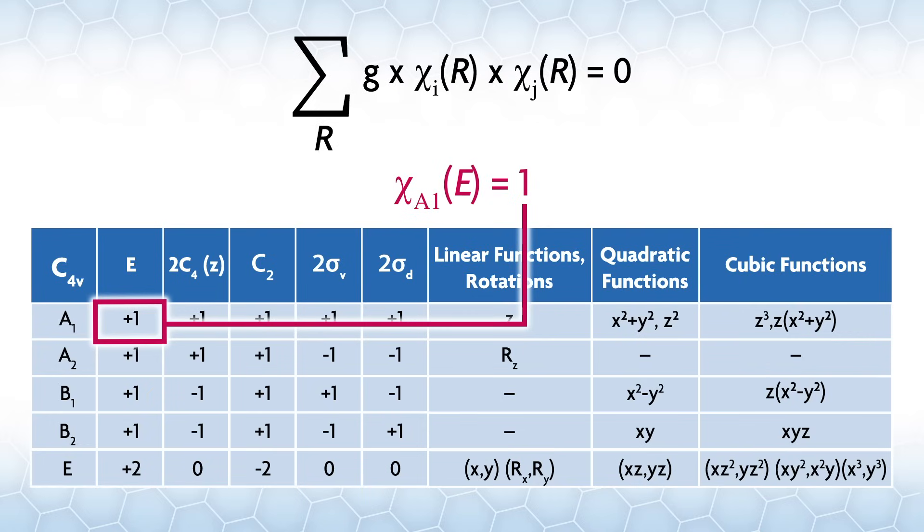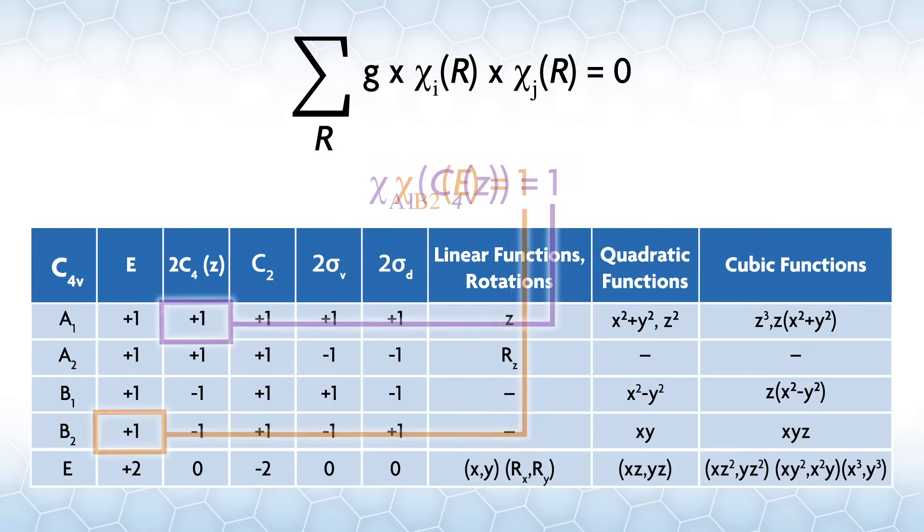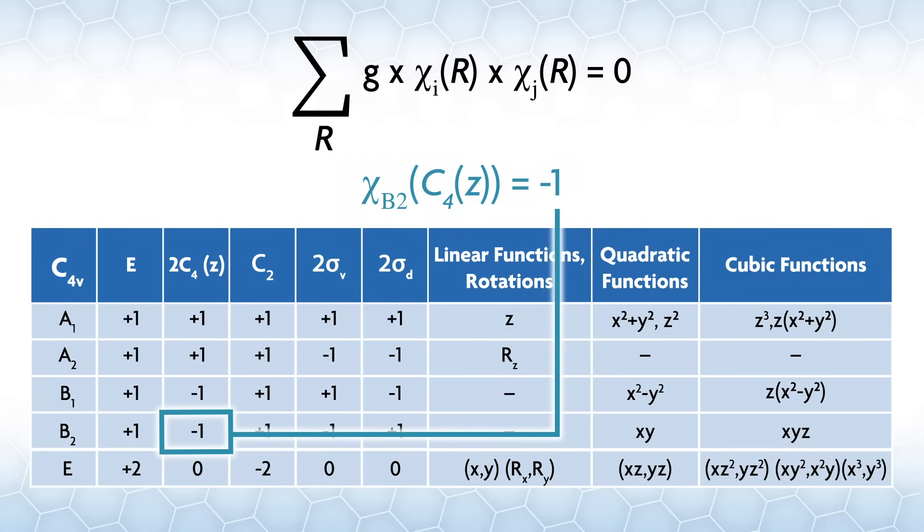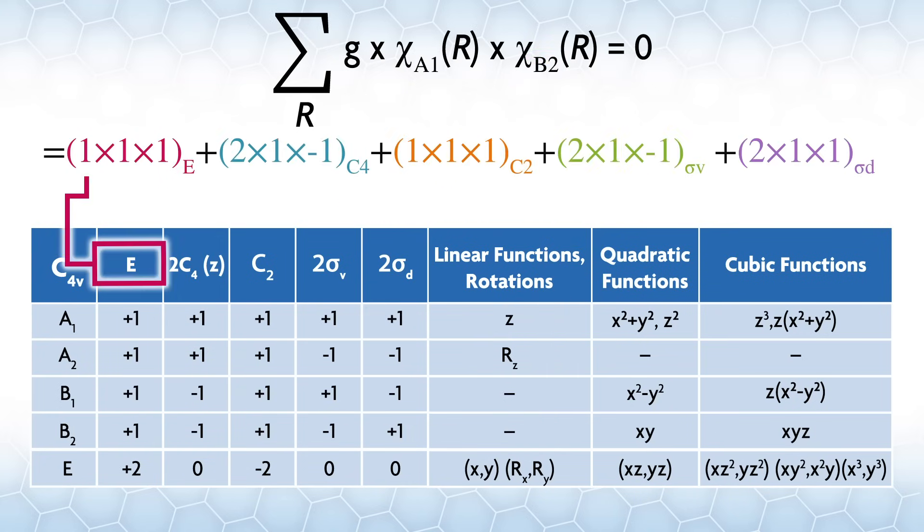Let's assume we're going to show that A1 and B2 are orthogonal. Chi A1E equals 1 and chi B2E equals 1. Under C4Z, the character for A1 is 1 and it's negative 1 for B2. Here's the full equation where i equals A1 and j equals B2.